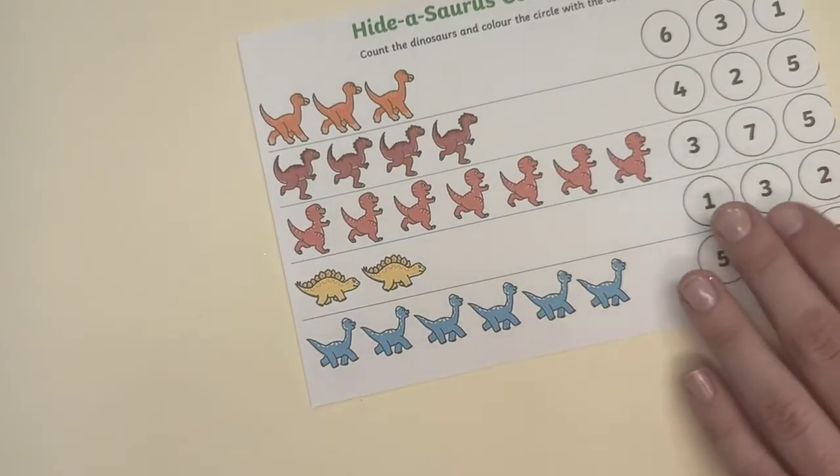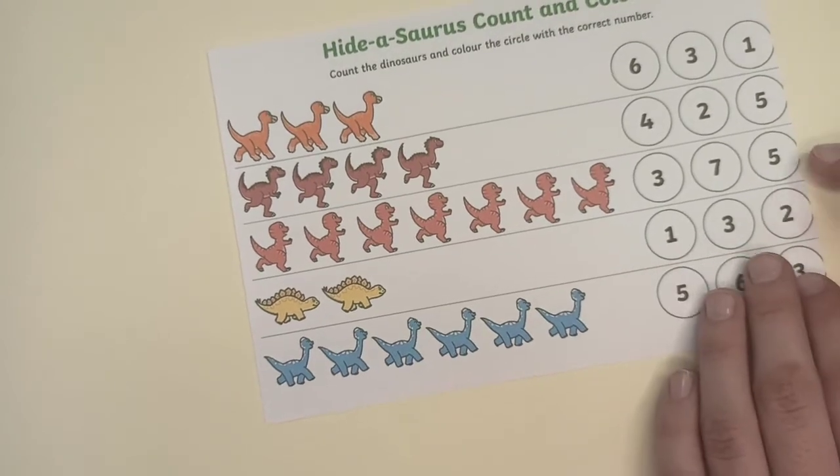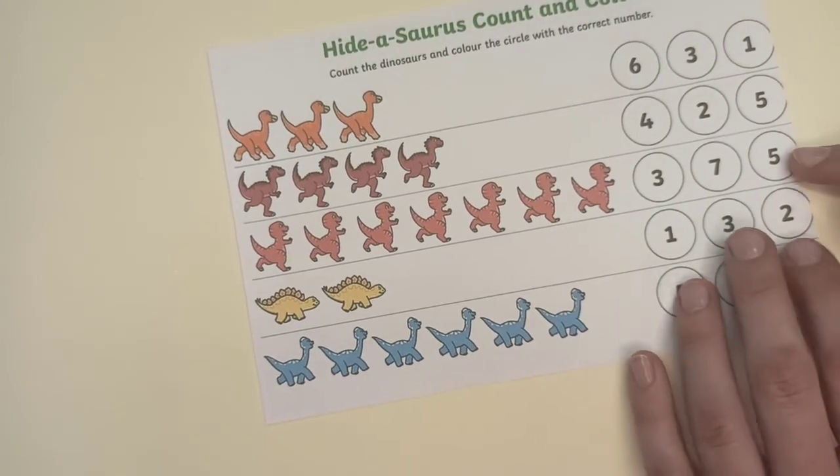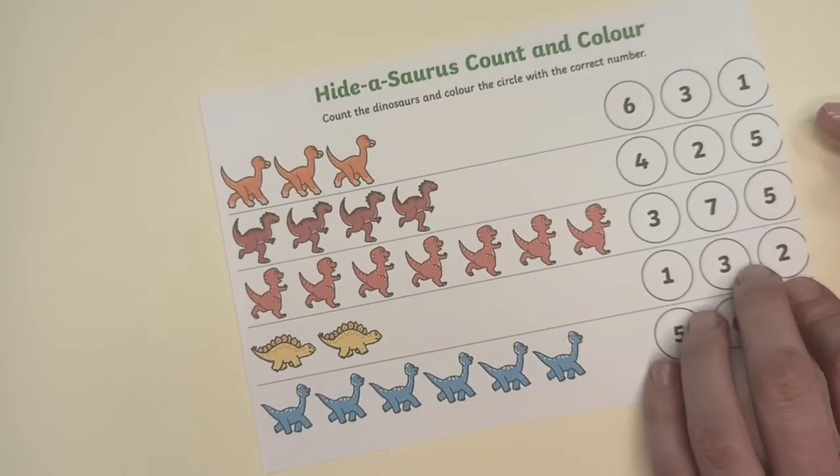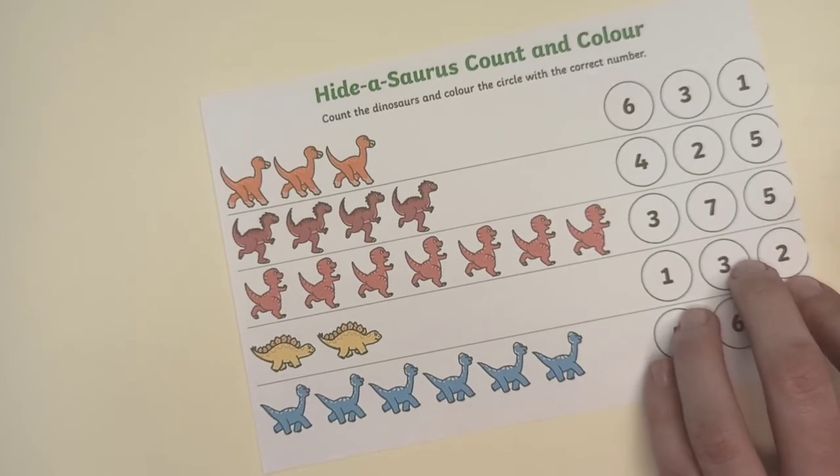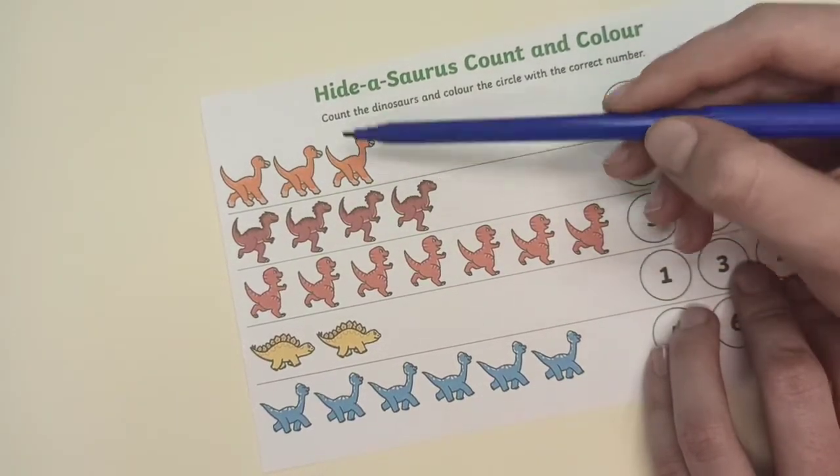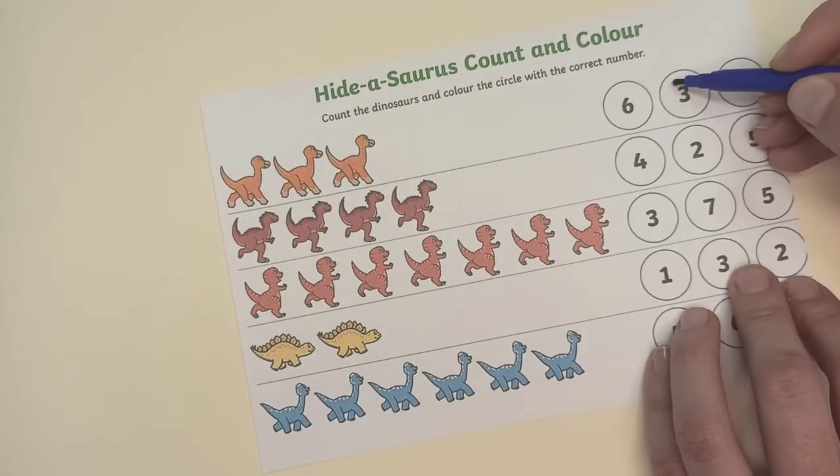Next activity is to count the dinosaurs and to color the circle with the correct number. First circle the number. Let's go 1, 2, 3. Number 3.